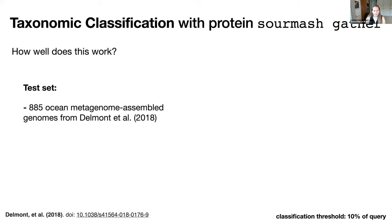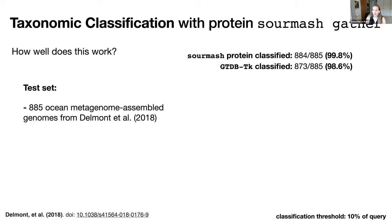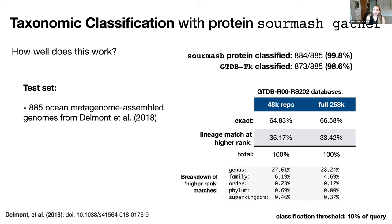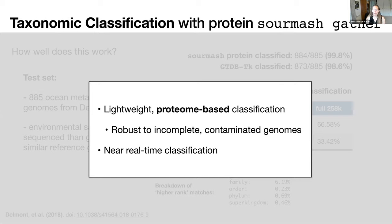Extending this to an environmental set, we took 885 genomes from the Tara Oceans dataset from the Delmont paper. Here we had exact matches at about 66%, and some match at a higher lineage rank at 33%. Breaking those down, most of those lineage matches happened at the genus level — we got the same genus-level classification, but a different species was selected. We need to look into those differences, but it's promising because this is a really lightweight, whole-proteome k-mer-based classification, which means it's likely to be more robust to incomplete and contaminated genomes, and because it's k-mer-based, it offers near real-time classification.